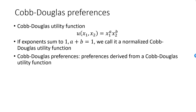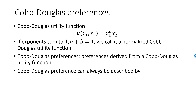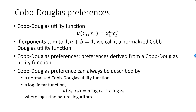Here is a summary. Cobb-Douglas preferences can be described by many different utility functions. They can always be described by a normalized Cobb-Douglas utility function, where the sum of the exponents is equal to one. And they can always be described by a log-linear function: u equals a times log x1 plus b times log x2.